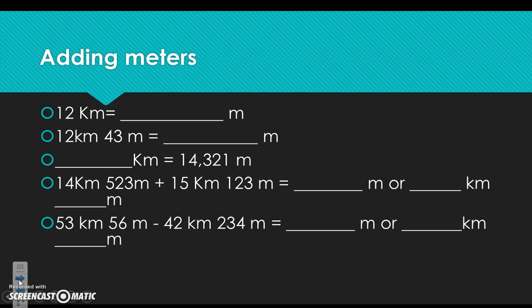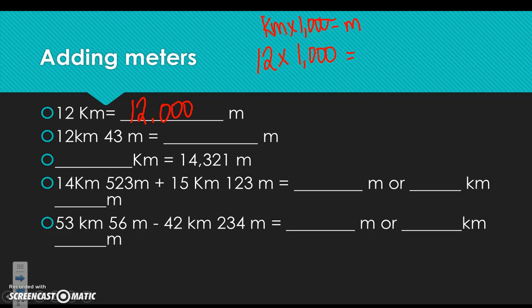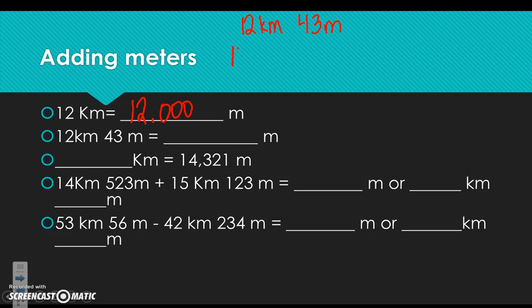Now let's talk about adding meters. If I have 12 kilometers, I know 12 times 1,000 gives me my meters, so I have 12,000 meters. But if I have 12 kilometers and 43 meters, I first multiply kilometers by 1,000 to get 12,000, then add on the 43 meters to get 12,043.